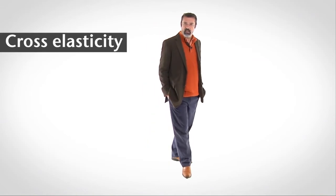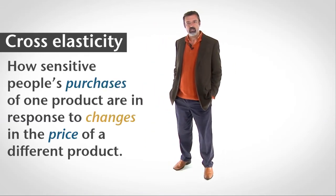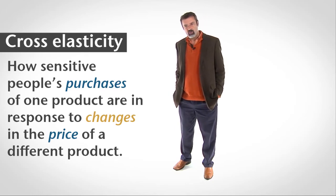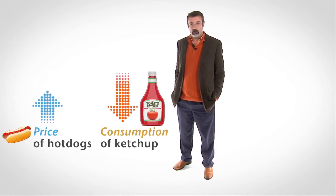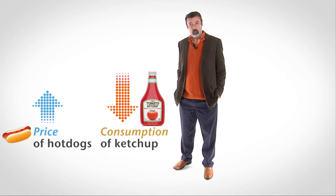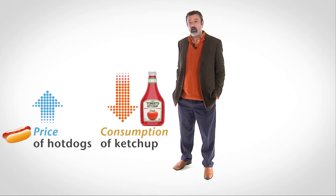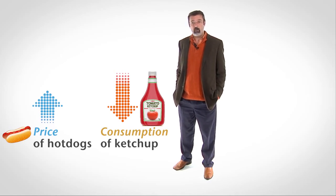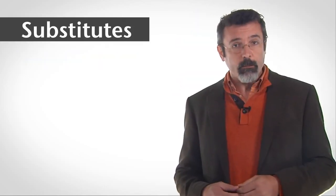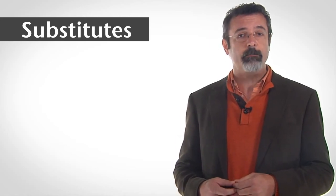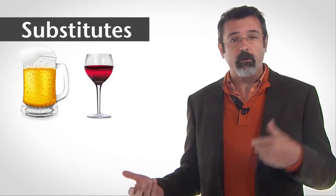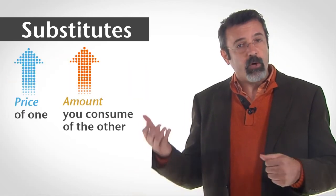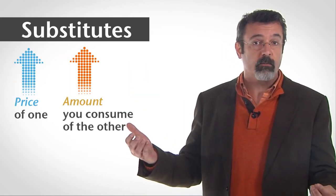The cross-elasticity of demand tells us how sensitive people's purchases of one product are in response to changes in the price of a different product. For example, if the price of hot dogs rises a little and you consume a lot less ketchup than you did before, we say that your consumption of ketchup is very sensitive to changes in the price of hot dogs. Cross-elasticity also tells us whether consumers regard two products as substitutes or complements. Substitutes are goods that consumers usually consume in place of each other, like pizza and spaghetti, beer and wine, movies and baseball games. If the price of one rises, then the amount that you consume of the other rises also.